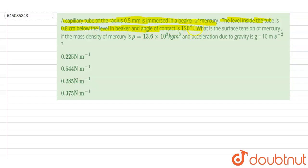Contact angle is 120 degrees. What is the surface tension of the mercury if the mass density of the mercury is given here and acceleration due to gravity you have to take 10? So let us do it from basic.